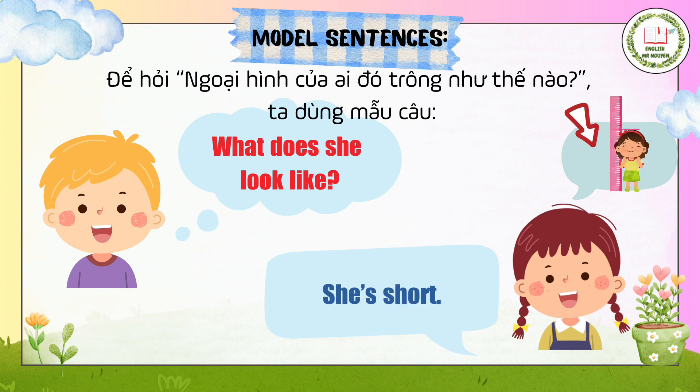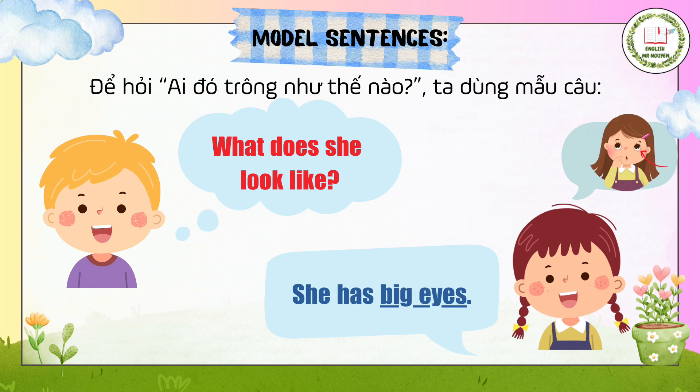Similarly, to ask what her appearance looks like, we use the sentence pattern: What does she look like? If she is short, we answer: She's short. And if she has big eyes, we answer: She has big eyes.